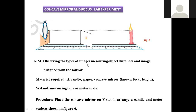The aim of the experiment is observing the type of images, measuring the object distances and image distances from the mirror by changing the position of the object. How can we change the image? What will be the change in image, and how many types of image formations are possible? We consider a white paper on which the image is created — what is the distance from the object and from the mirror?